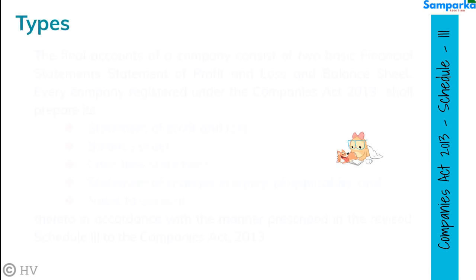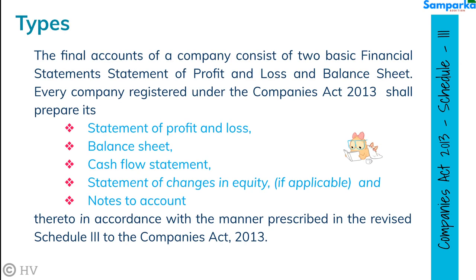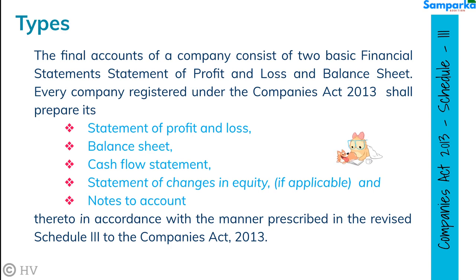The final accounts of a company consist of two basic financial statements: statement of profit and loss, and balance sheet. Every company registered under the Companies Act 2013 shall prepare its statement of profit and loss, balance sheet, cash flow statement, statement of changes in equity (if applicable), and notes to accounts thereto, in accordance with the manner prescribed in the revised Schedule III to the Companies Act 2013.